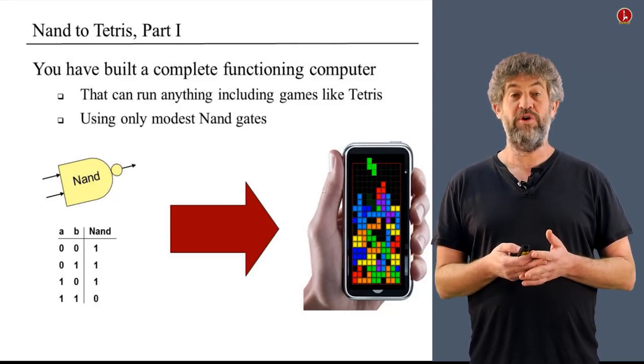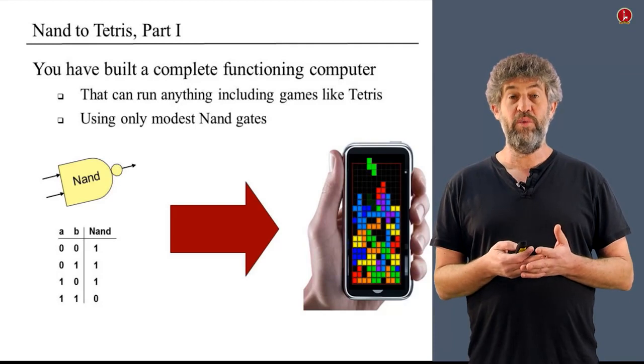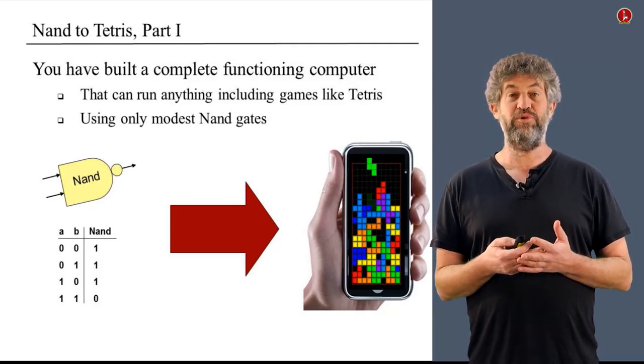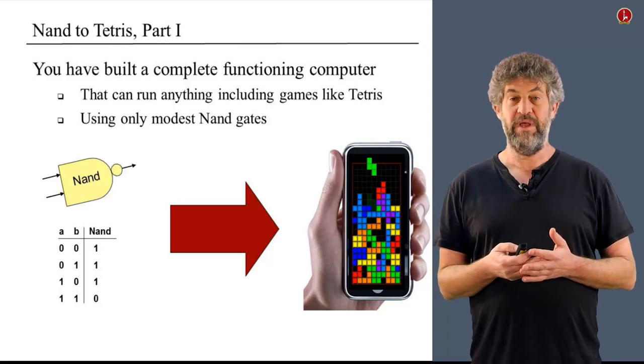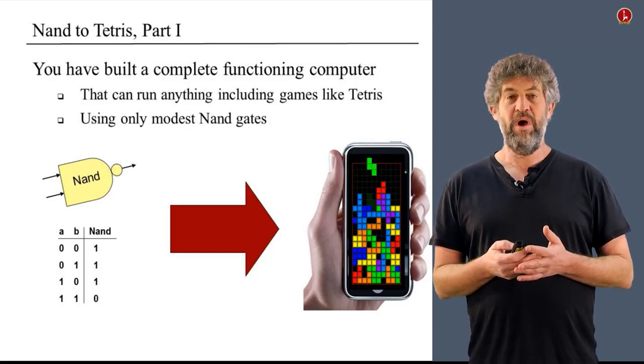In the first part, in this course, you're going to start with very simple NAND gates, as you've heard, and you get all the way to a working computer system on which you can run any program, for example Tetris, that gives this course its name. So what remains? What are we going to do in the second part?